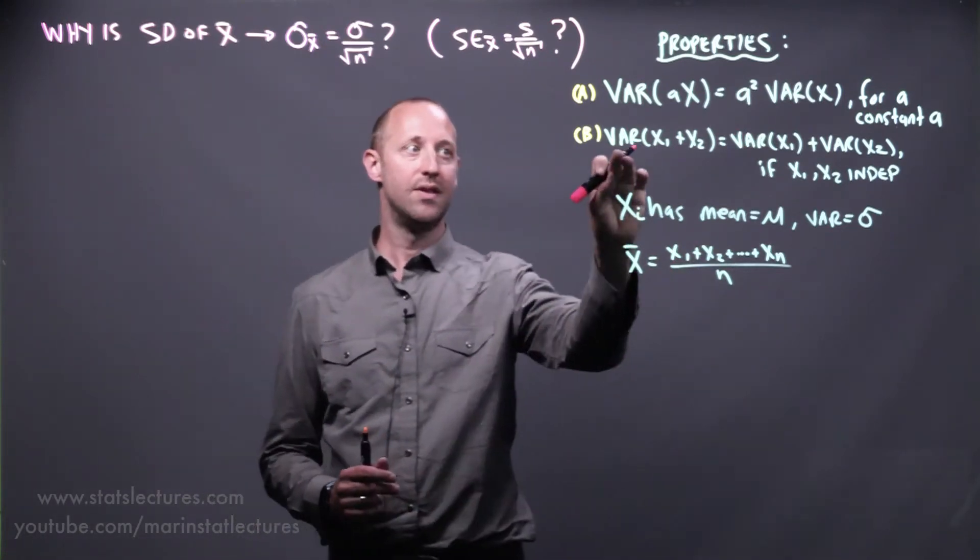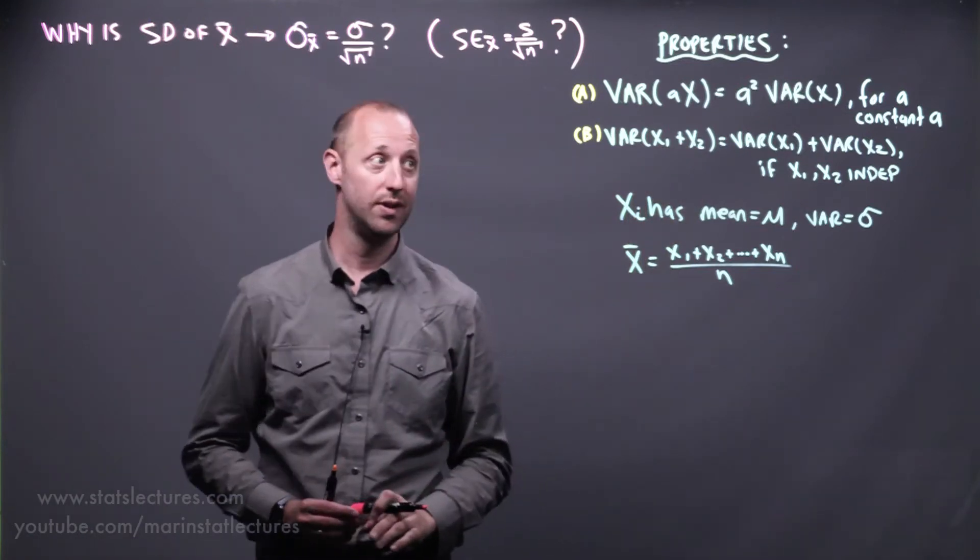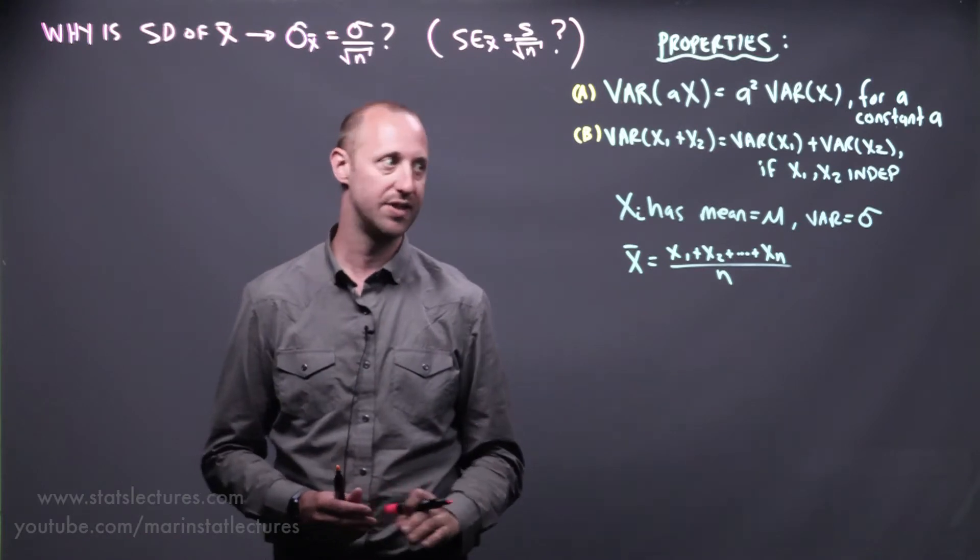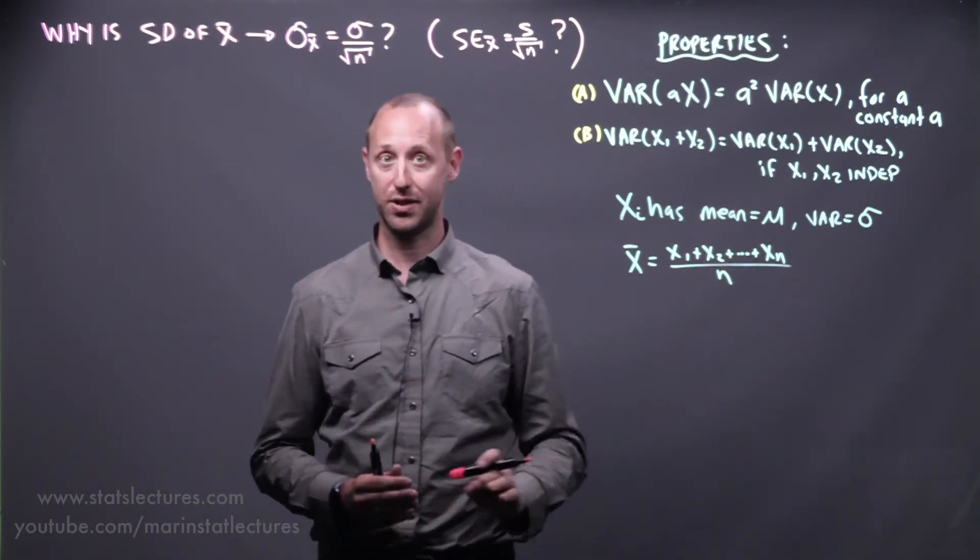And the second property, the variance of x1 plus x2 is equal to the variance of x1 plus the variance of x2, the sum of their individual variances, if x1 and x2 are independent.